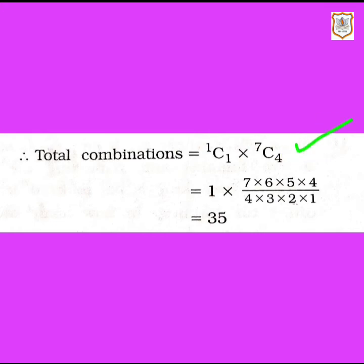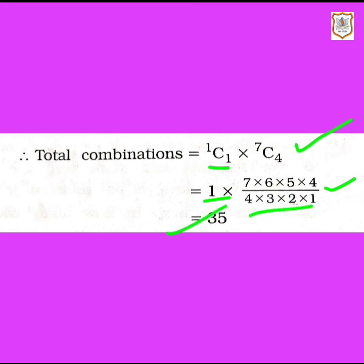Now let's solve both combinations. The combination for the first condition is 1C1 × 7C4. The value of 1C1 is 1, and 7C4 = 7×6×5×4 / (4×3×2×1). When you solve this the answer is 35. So the answer for the first condition — a particular book is always selected — is 35.